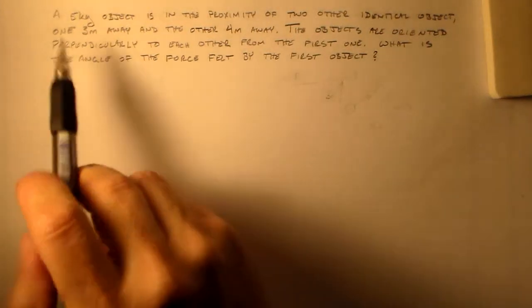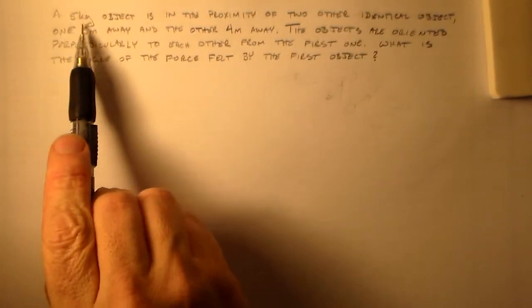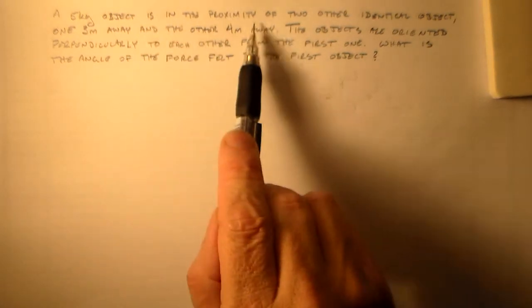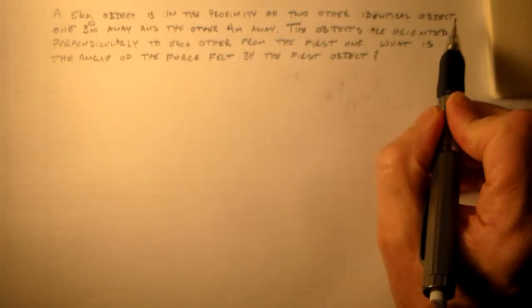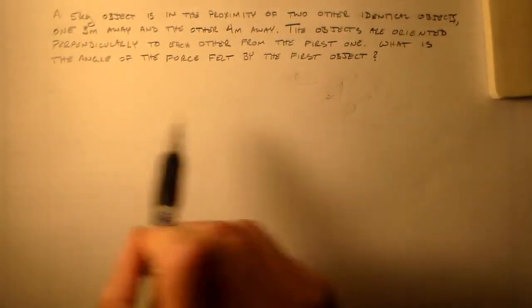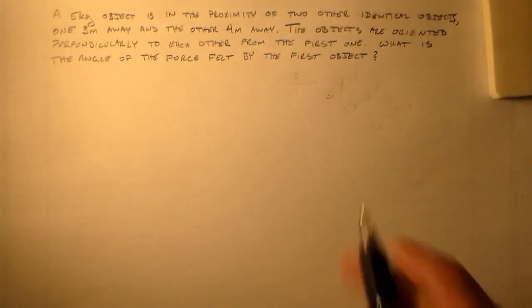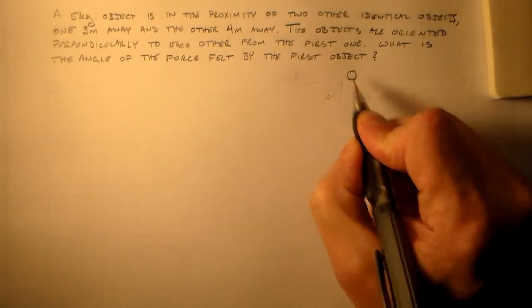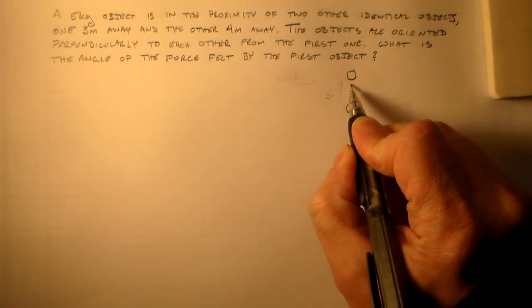Okay, so what I'd like to do is look at a gravitation problem where I have a five kilogram object in the proximity of two other identical objects. There's an S there. One will be three meters away from the other one, from it, right here, one, two, three,